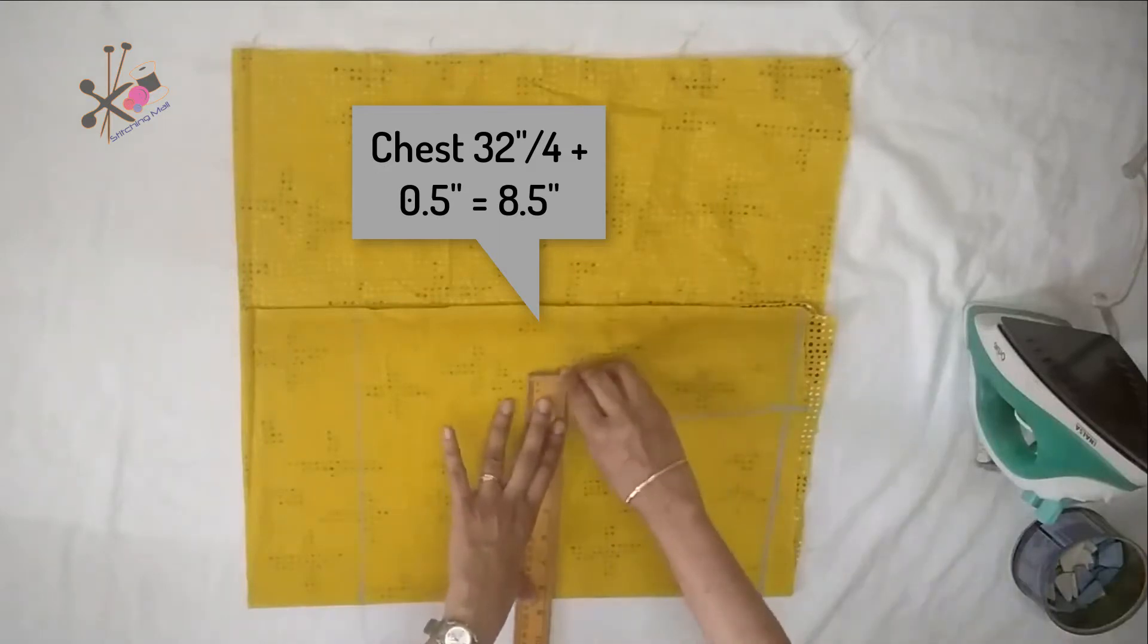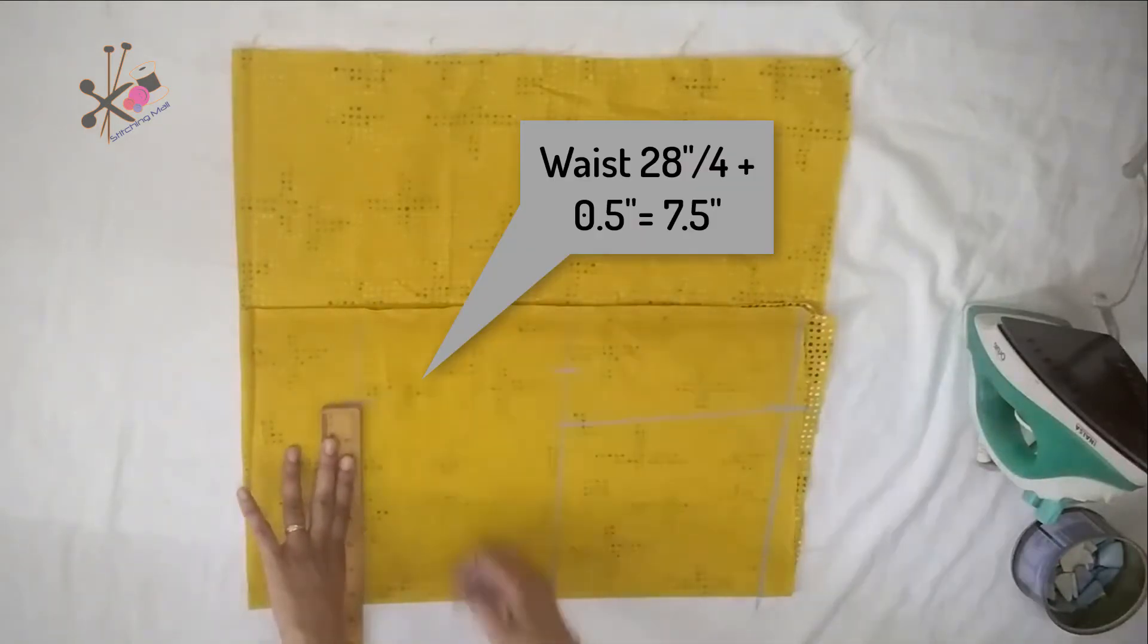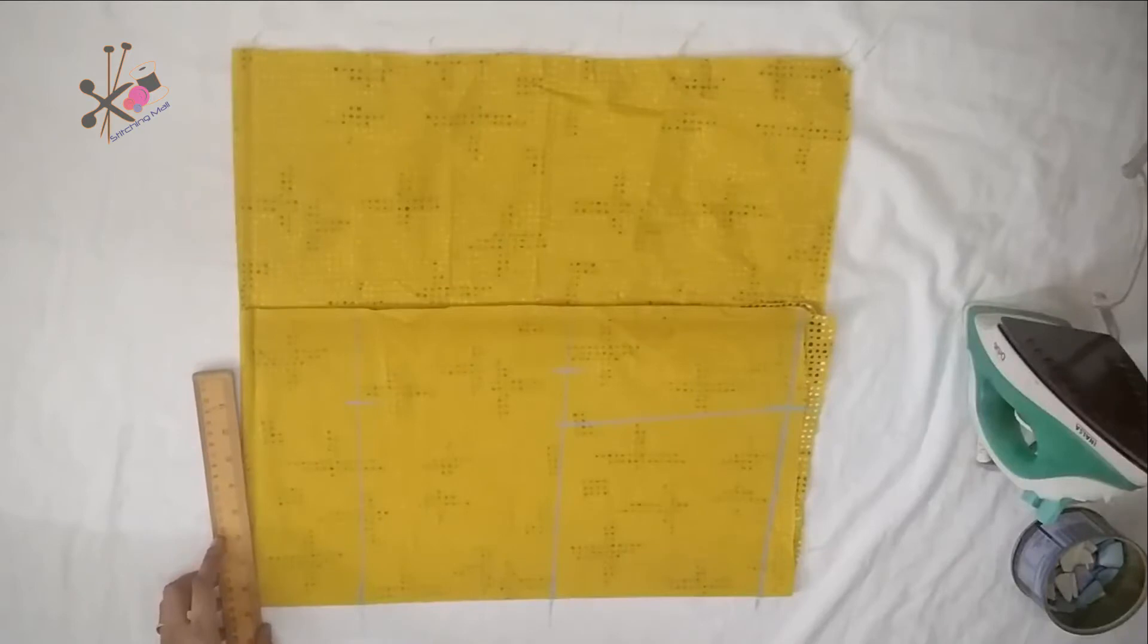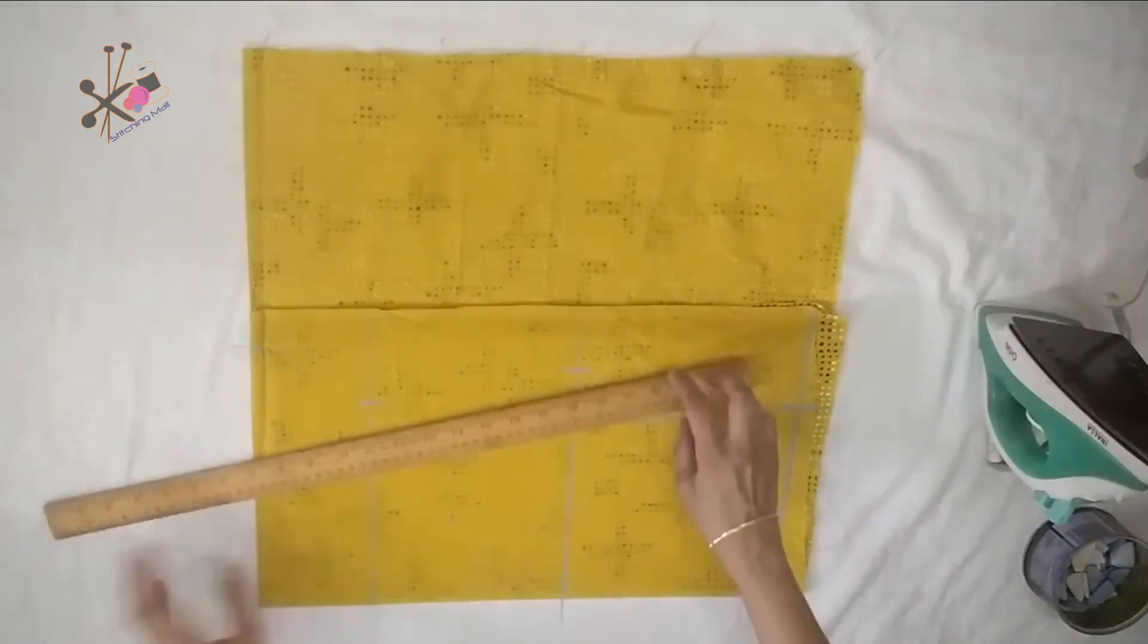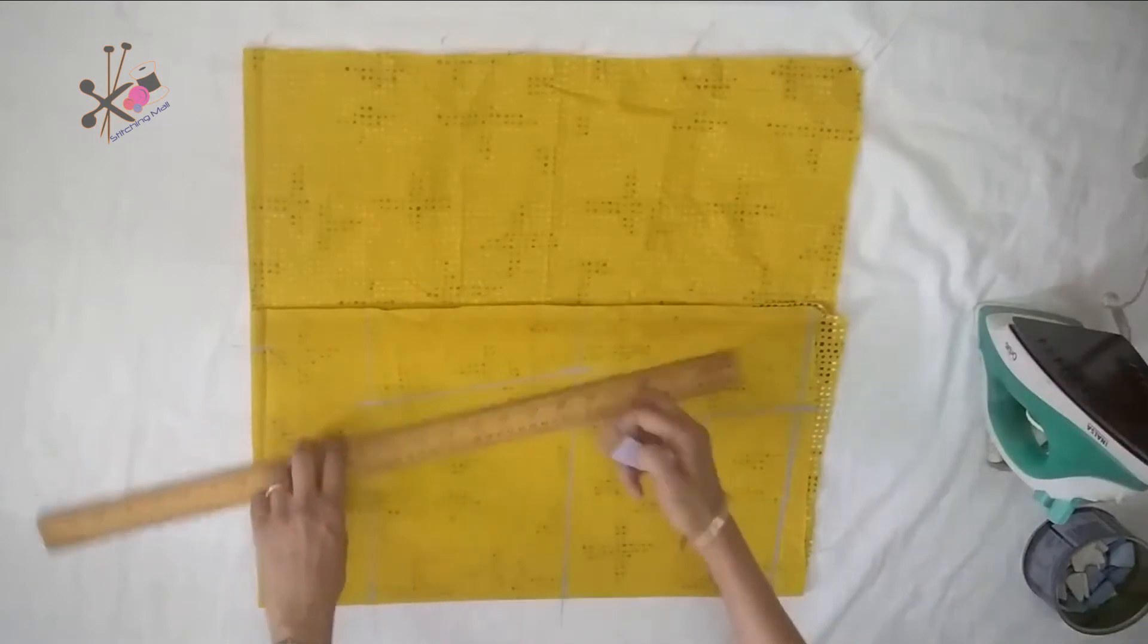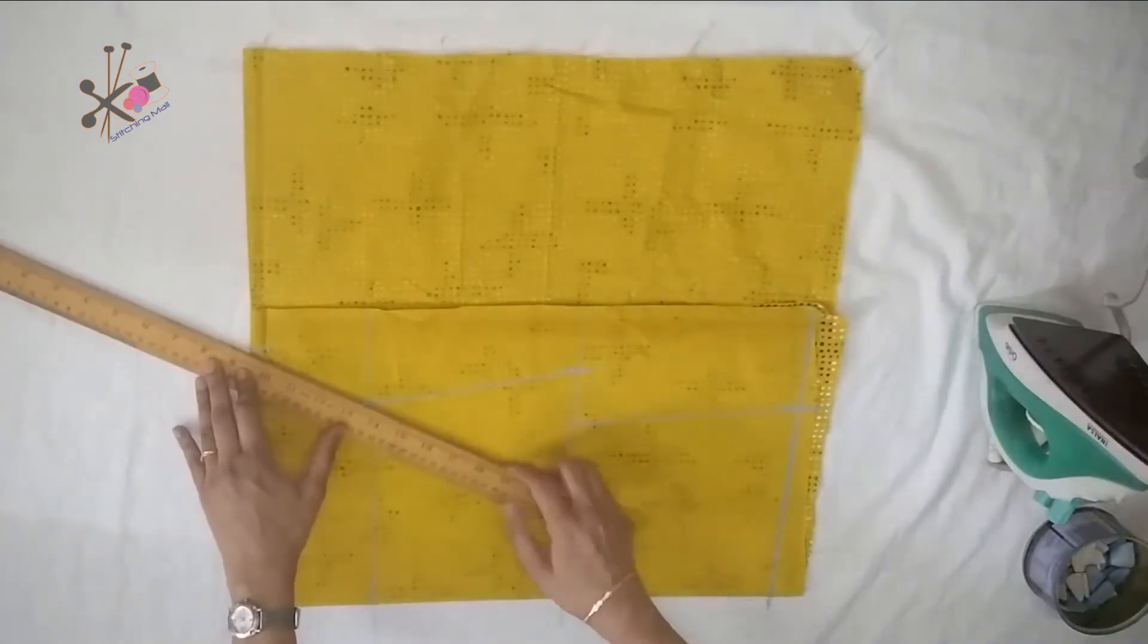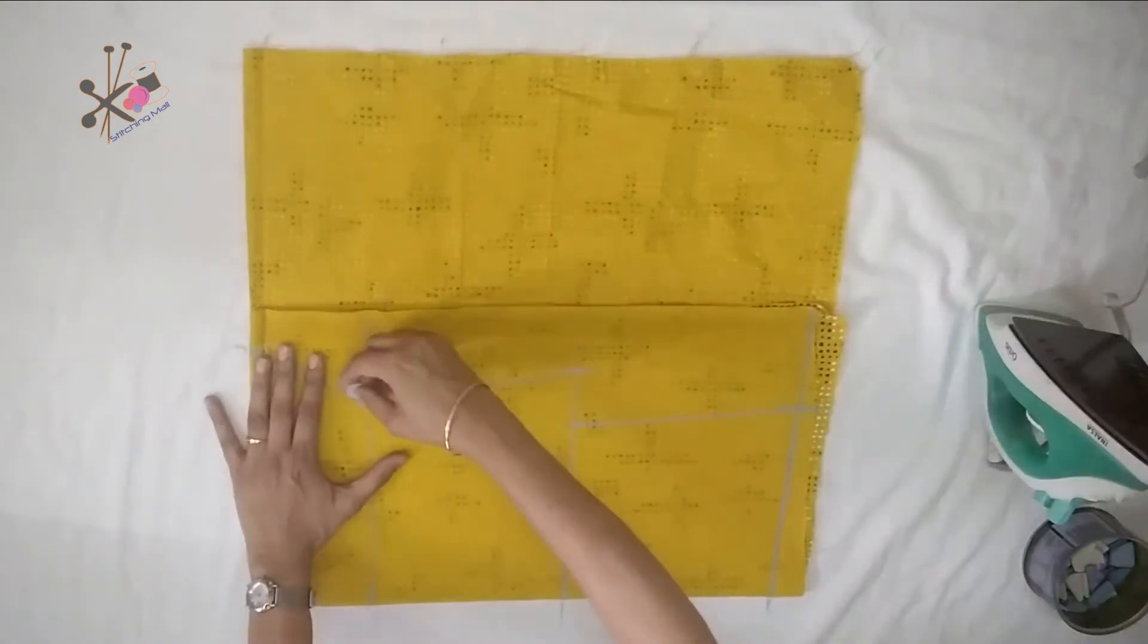Then the chest line, waistline, and the bottom line - you can keep same as the chest line or hip fold, 1/4 part of hip plus half inch. Join these markings and shape from the sides.